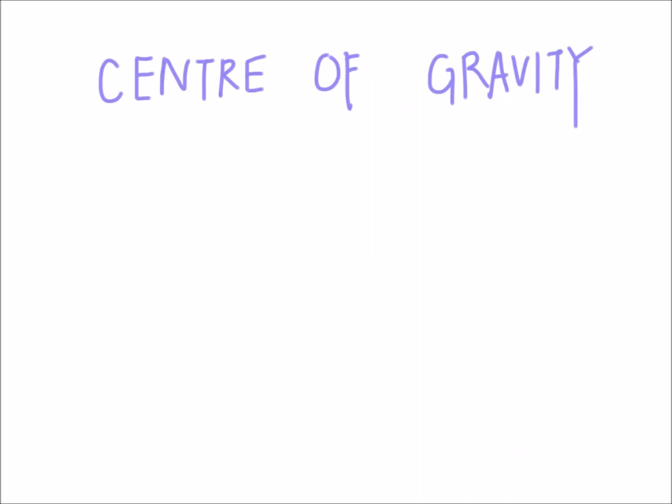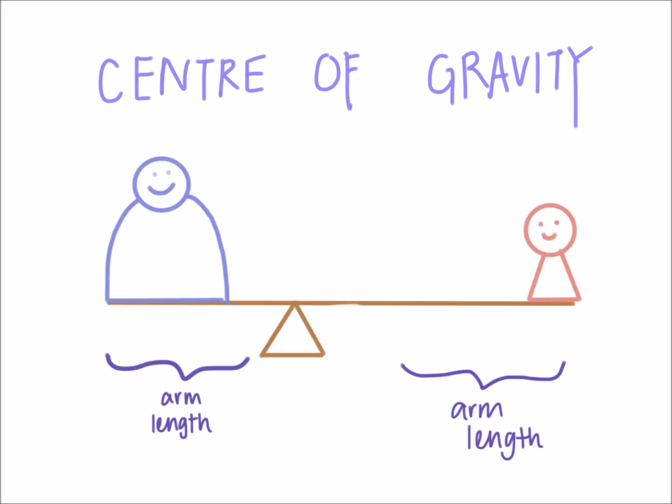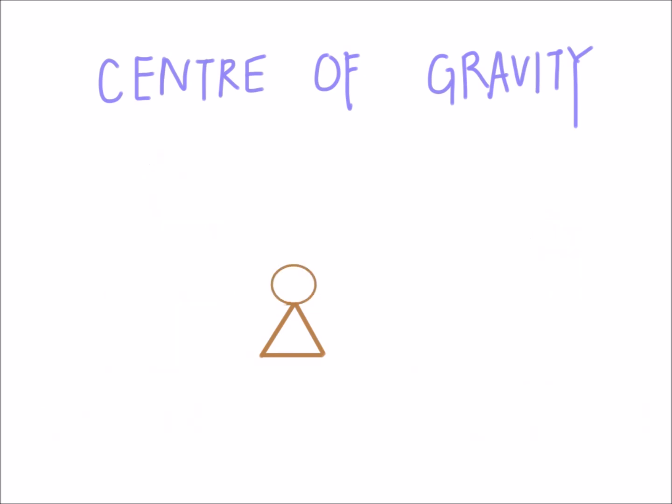The center of gravity of an object is the balance point around which there are equal moments, arms of length times weight. The object can act as if all its weight was concentrated at the center of gravity.